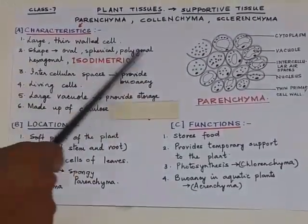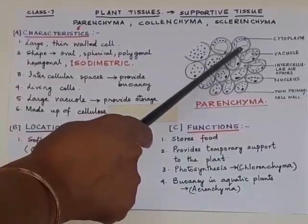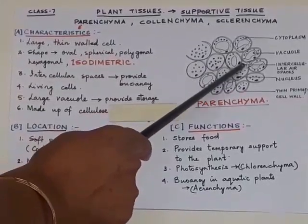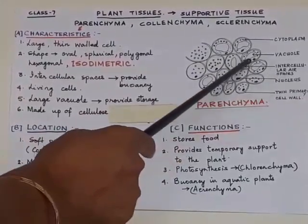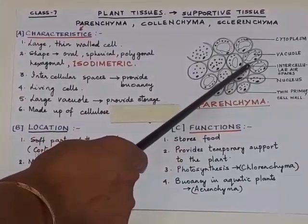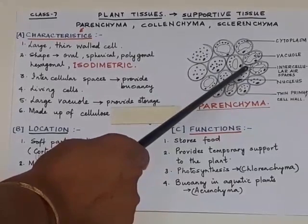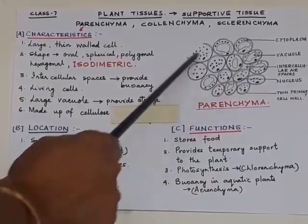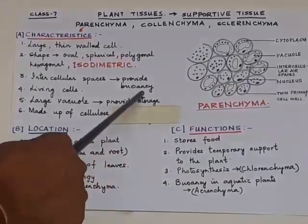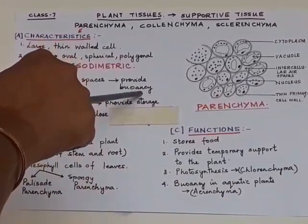Parenchymatic cells have large intercellular spaces. You can see in this diagram these intercellular spaces, and these intercellular spaces provide buoyancy in aquatic plants, meaning they can float.